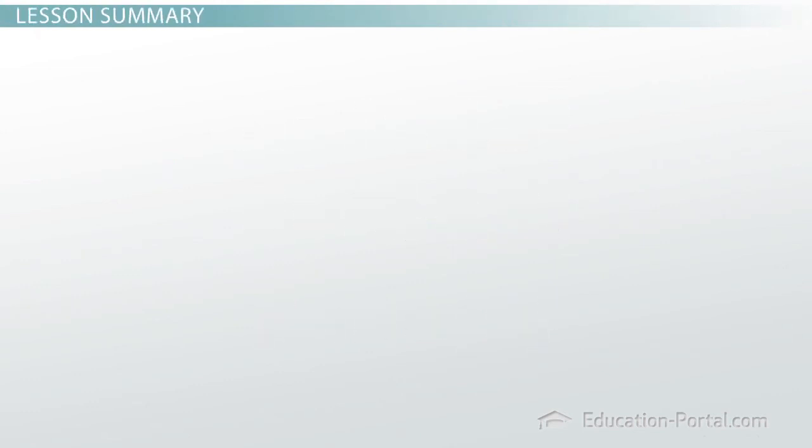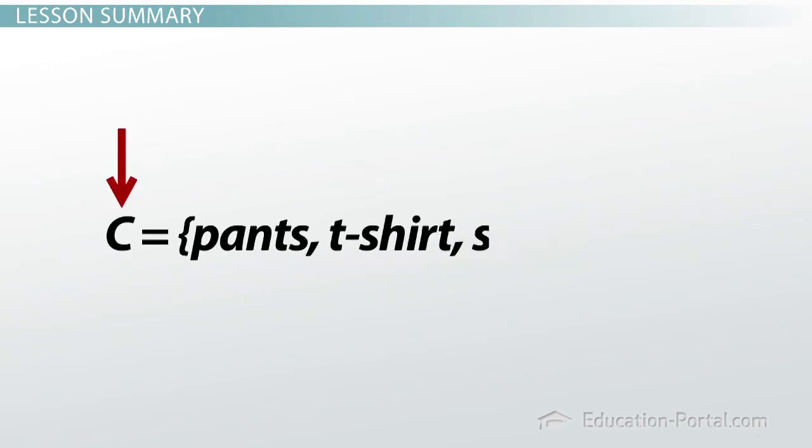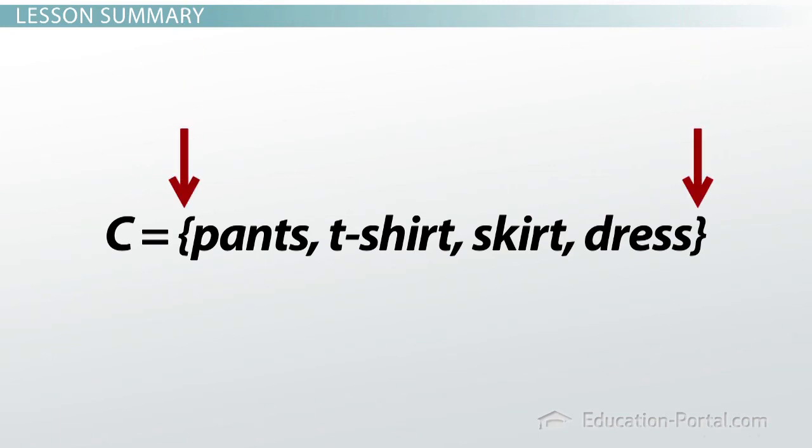Let's review what we just talked about. A set is a bunch of objects. It could be numbers, letters, anything. To show a set, we always use a capital letter. To show the members or the elements of the set, they always go between braces or these curly-Q kind of parentheses.